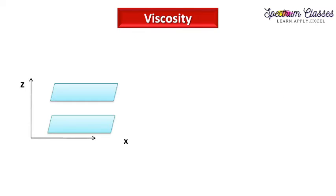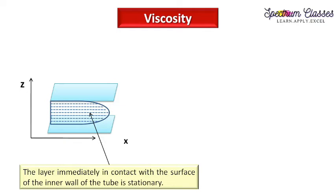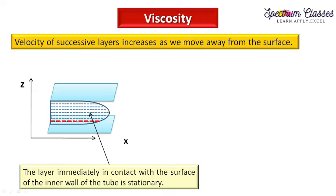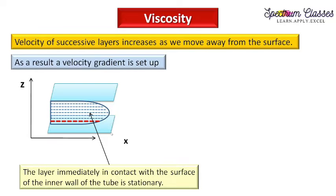Consider this glass tube again with fluid flowing through it. The layer immediately in contact with the glass tube — represented in red — seems to be stationary. This is one of the properties of laminar flow. As we move away from this surface, the velocity of successive layers increases. Therefore, a velocity gradient is set up.